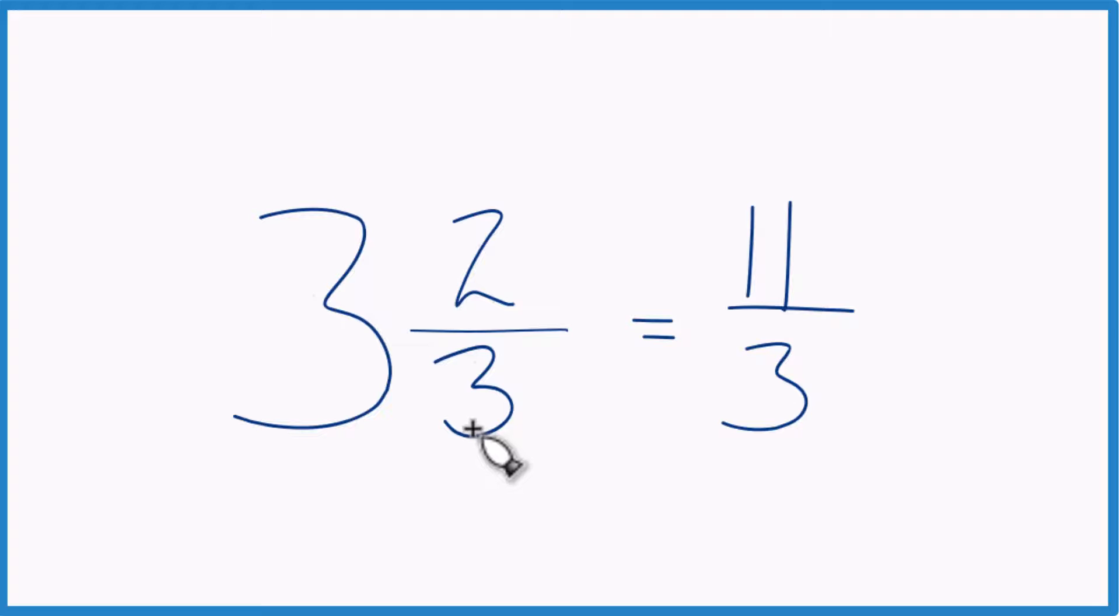Let's do it again. 3 times 3 is 9. 9 plus 2, that's 11, our numerator. Bring the denominator across. 3 and 2 thirds, that's the same thing as 11 thirds.